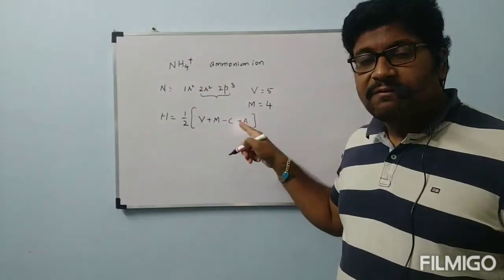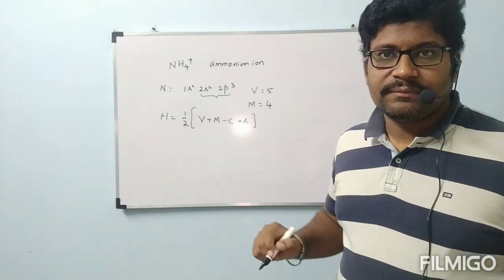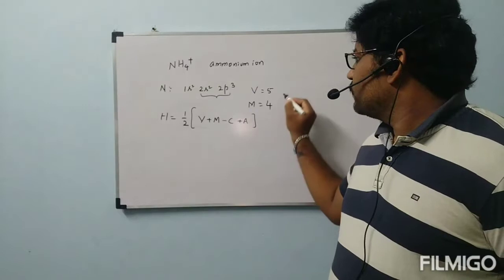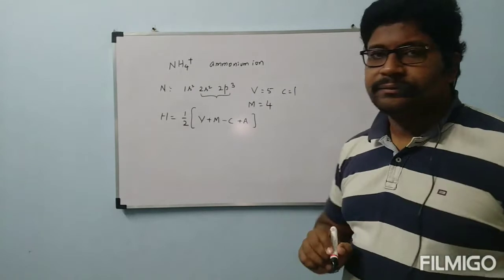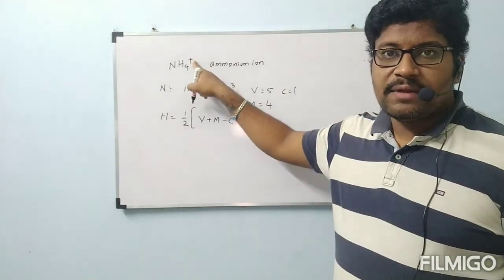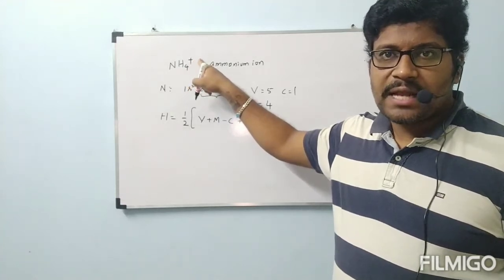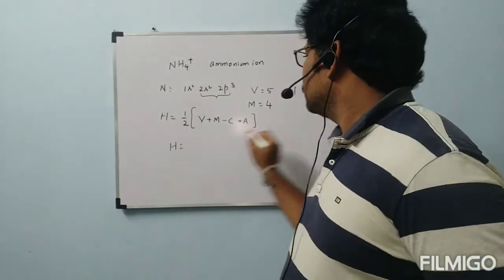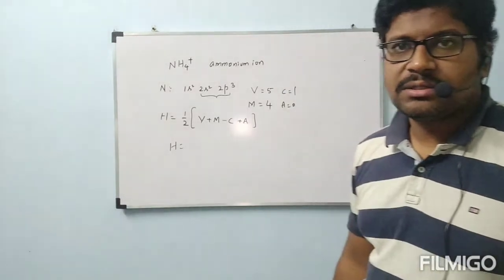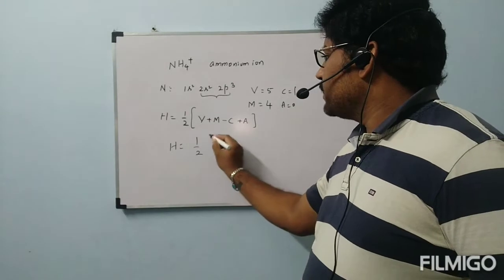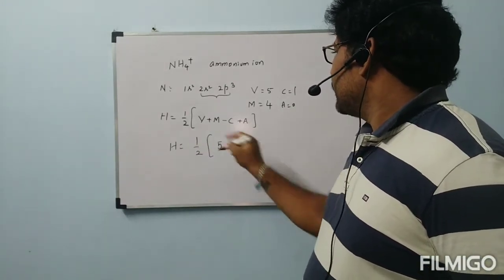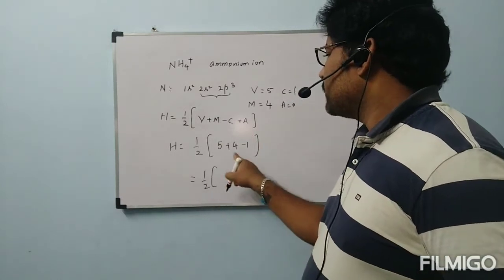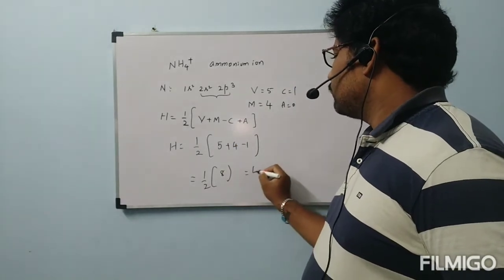A is used when the species is an anion, but NH4+ has no anionic charge, so A = 0. Since the charge is written as just '+', there is no explicit numeral, meaning C = 1. Substituting: H = ½(5 + 4 - 1) = ½(8) = 4. So H = 4.